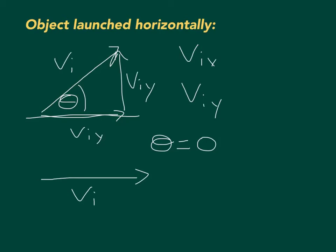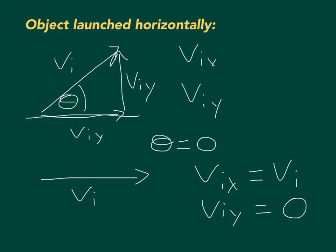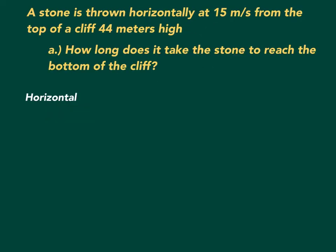The implications for the velocity components are: v_initial_x is just v_initial, because v_initial is entirely in the x direction with no vertical component. Therefore v_initial_y is zero. So for an object launched horizontally, v_initial_x equals whatever v_initial is, and v_initial_y equals zero. Coming back to our problem — a stone thrown horizontally at 15 m/s from a 44-meter cliff — we need to find how long it takes to hit the bottom.